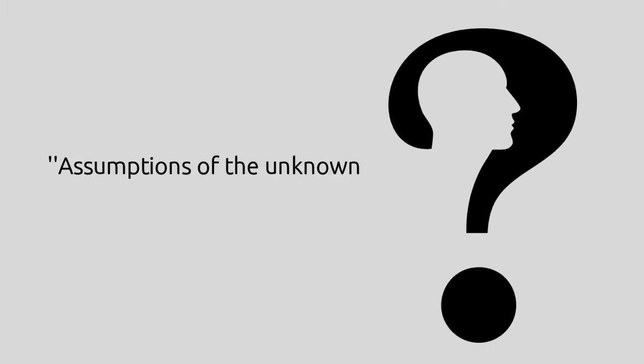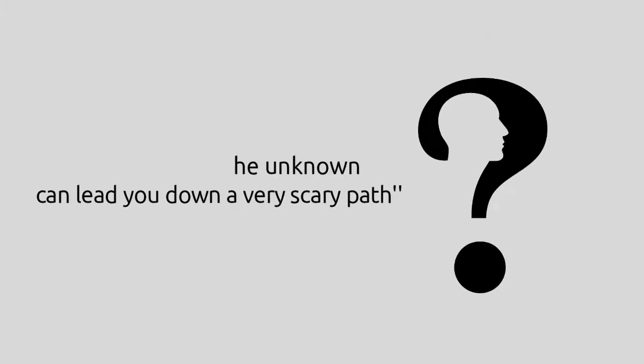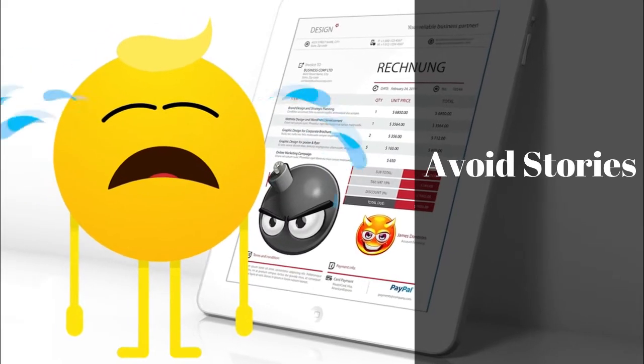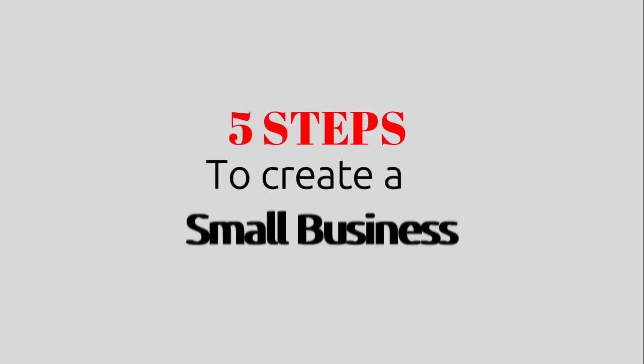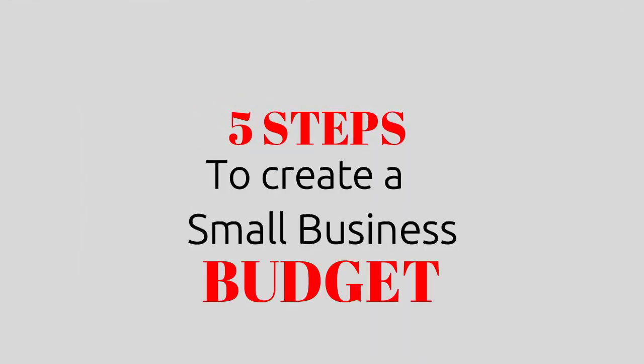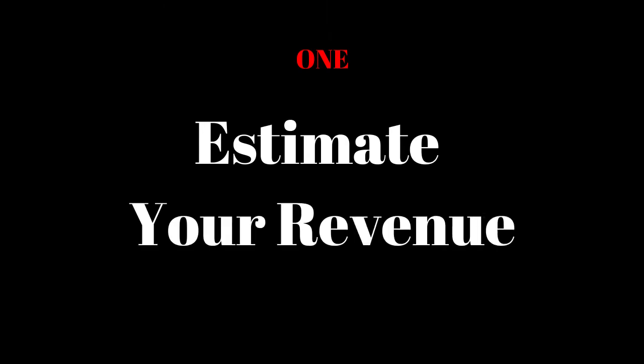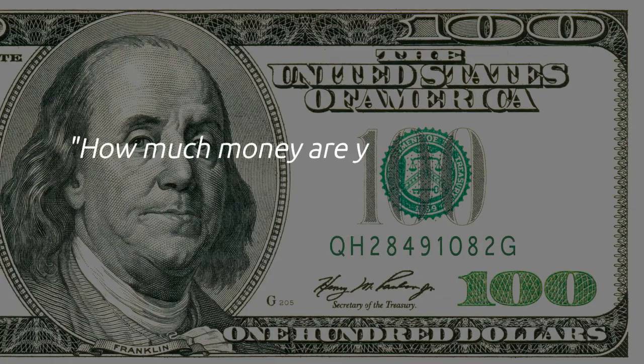When it comes to business, assumptions and the unknown can lead you down a very scary path. So to avoid that, here are five steps to creating a small business budget. Step one: estimate your revenue. First, how much money are you estimating to bring into the business from your goods or services?